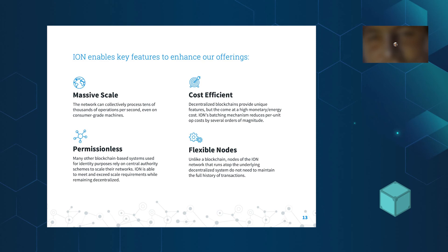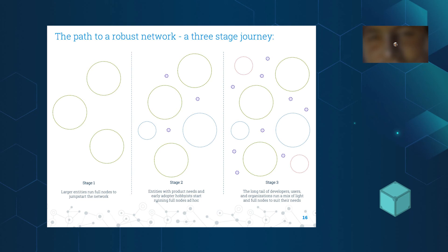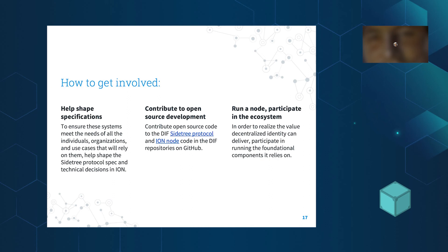We wanted to remove ourselves as much as possible. We don't want Microsoft to be some sort of gatekeeper; we want to build something that can live completely independently from us. The path to a robust network is three stages: get larger organizations to run full nodes and mirror all the data including the IPFS data, then pick up the long tail and enable users to have subsets of the IPFS data required, and build a robust mirrored network of peers. All the work happens in the Decentralized Identity Foundation — Sidetree and ION are both projects not within Microsoft's own open-source repos.